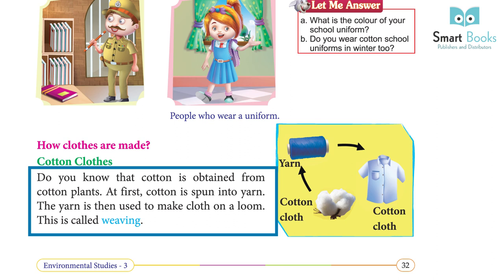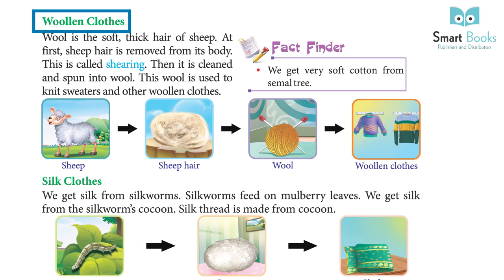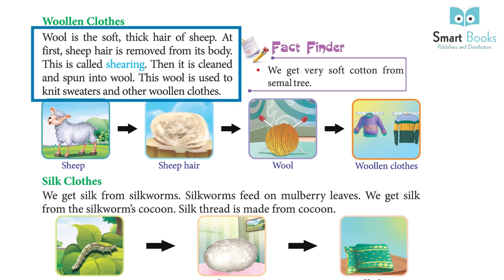At first, cotton is spun into yarn. The yarn is then used to make cloth on a loom. This is called weaving. Woolen clothes: wool is the soft thick hair of sheep. At first, the sheep's hair is removed from its body. This is called shearing.